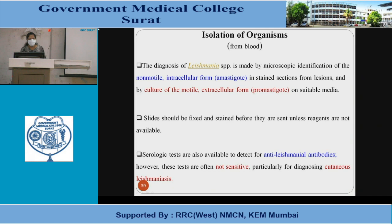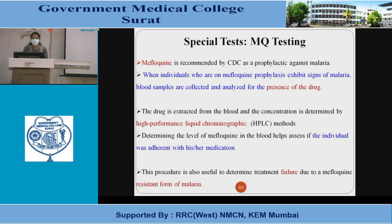Isolation of organism from blood: diagnosis of Leishmania species is made by microscopic identification of non-motile intracellular forms, amastigotes, in stained sections from lesions, and by culture of motile extracellular forms, promastigotes, on suitable media. Serological tests are available for anti-Leishmanial antibodies, though sensitivity is low particularly for cutaneous leishmaniasis. Special tests: mefloquine is recommended by CDC as a prophylactic against malaria. Blood samples from individuals on mefloquine prophylaxis exhibiting signs of malaria are analyzed for drug concentration by HPLC. This helps assess medication adherence and treatment failure due to mefloquine-resistant malaria.